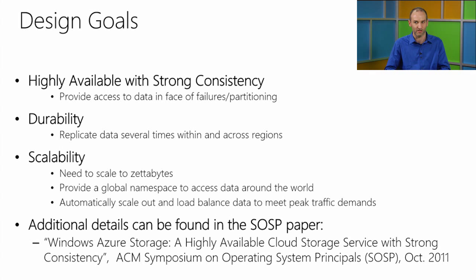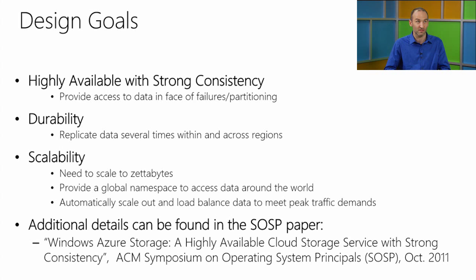We'll talk about geo-replication and how we ensure data is copied enough times. Another design point is to scale to store zettabytes of data and provide that data wherever you are in the world, wherever you have internet service. We have a global namespace that allows us to do that, and significant effort goes into making it scalable and load-balanced. We also have a SOSP paper that goes into great detail about the design. One benefit is that we run all four abstractions on the same infrastructure, which allows us to mix and match different loads and reduce costs.